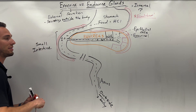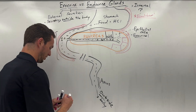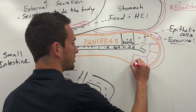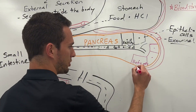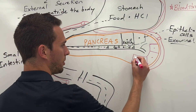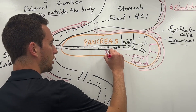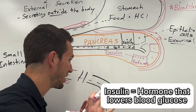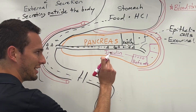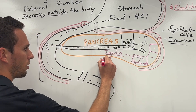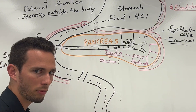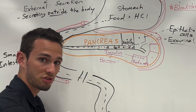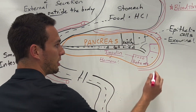Now let's contrast that with the endocrine function of the pancreas. One type of this comes in the form of beta cells, and what the beta cells produce is a hormone called insulin. You may know insulin as a hormone that lowers blood sugar — you'd be absolutely right — but the main thing here is that it is a hormone, and we know that hormones from this video are described as chemical messengers that travel in the bloodstream.